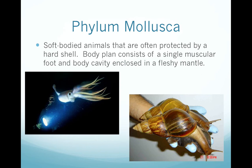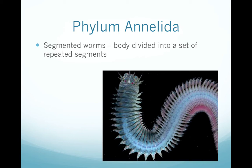Phylum Annelida are the segmented worms. These are interesting because their body is divided into a set of repeated segments, and each segment contains the same organs, making them interesting creatures to dissect.